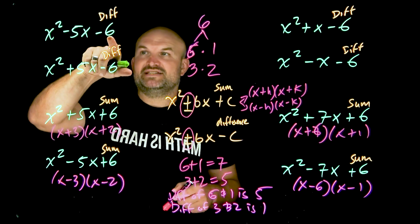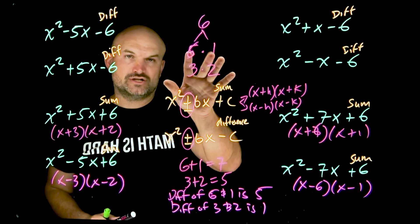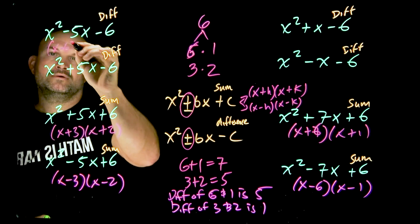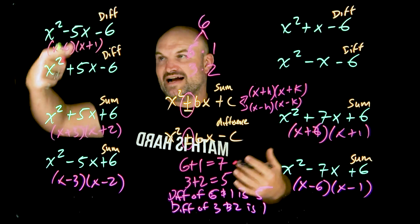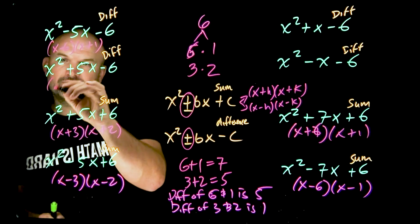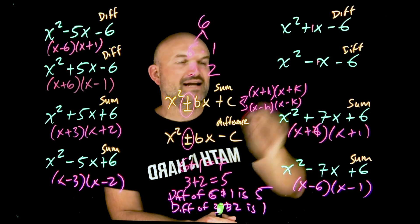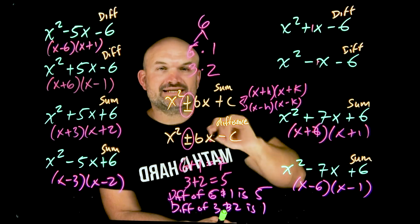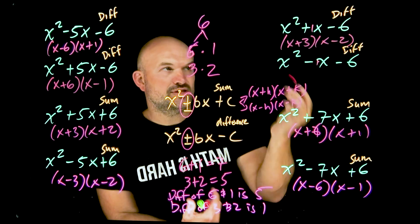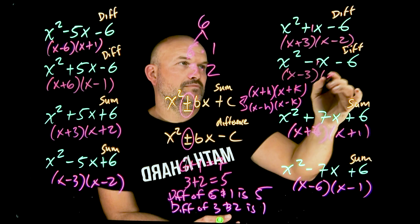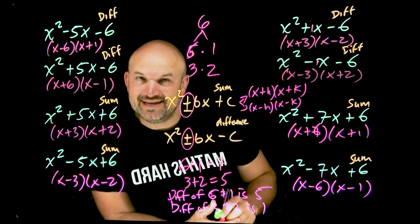So here, my two factors have a difference of five — that's six and one. Since the middle term is negative, the larger factor, six, has to be negative. Over here the middle term is positive, so the larger factor six has to be positive — giving (x + 6)(x − 1). Then for a difference of one, the factors are three and two. If the middle term is positive, the larger factor three is positive; if negative, three is negative. Hopefully after going through these examples and doing some practice, you will not make this mistake.